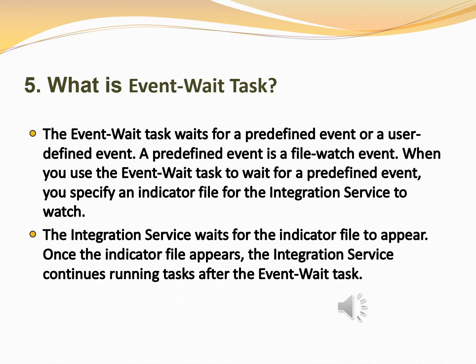The fifth question is: what is event wait task? The event wait task waits for a predefined event or a user-defined event. A predefined event is a file watch event. When you use the event wait task to wait for a predefined event, you specify an indicator file for the integration service to watch. The integration service waits for the indicator file to appear; once the indicator file appears, the integration service continues running tasks after the event wait task.